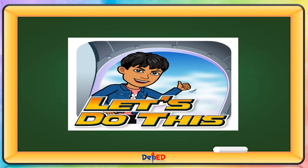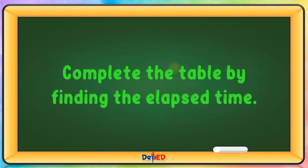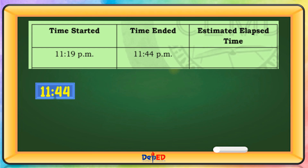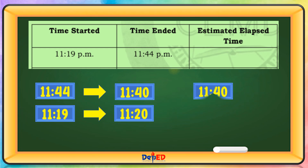Let's do this. Complete the table by finding the elapsed time. From 11:19 p.m. to 11:44 p.m. — round off 44 to the nearest tens: 11:44 becomes 11:40, and 11:19 becomes 11:20. Then, 11:40 minus 11:20 equals 20 minutes.